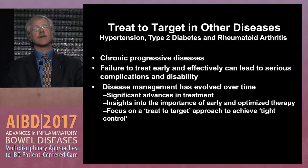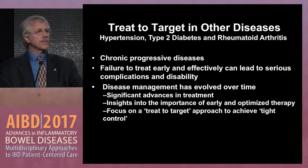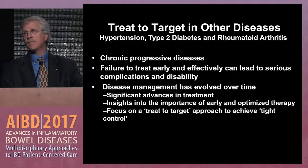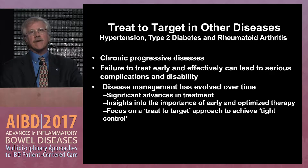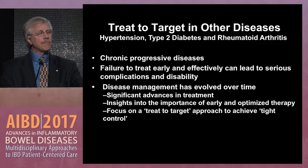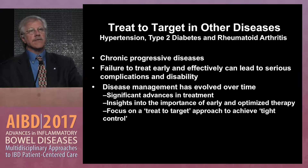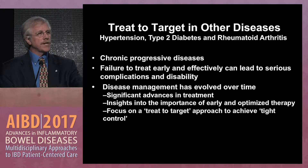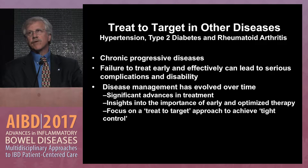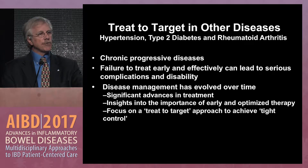The concept of treat-to-target is not new. Our colleagues in internal medicine have been using this for many years — hypertension, type 2 diabetes, and rheumatoid arthritis. We took the playbook from rheumatologists. All of these diseases, like inflammatory bowel disease, are progressive disorders. Failure to treat early and effectively can lead to serious complications and disability. The insights into the importance of early and optimized therapy we've basically taken from the rheumatologist, and with a treat-to-target approach we can potentially have better outcomes.